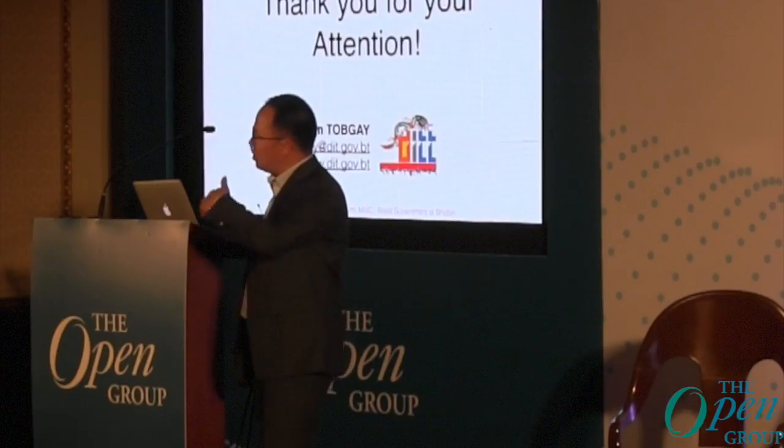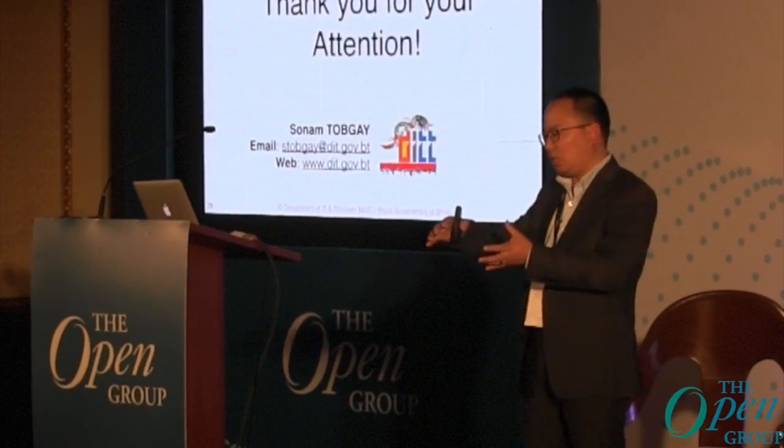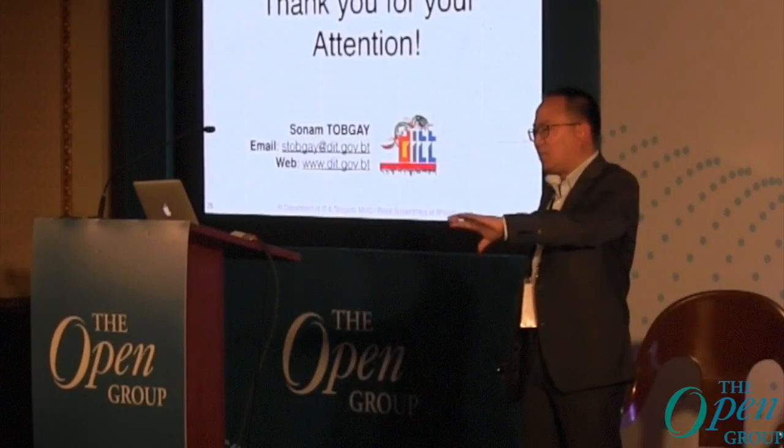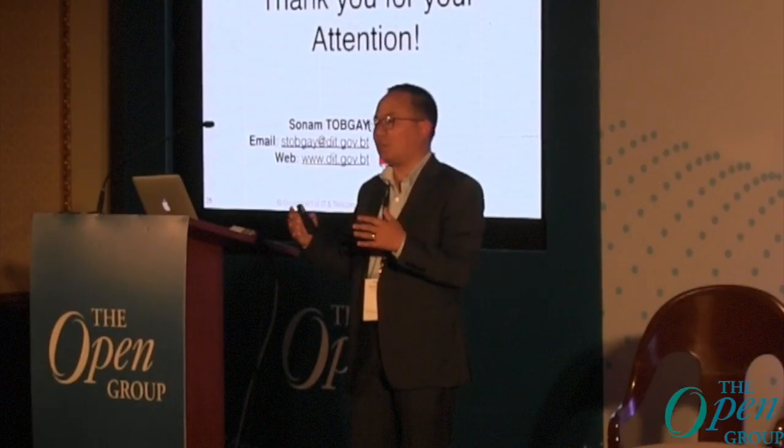Q: What architecture decisions have you taken while conceptualizing eGIF? A: The key decision was centralizing ICT initiatives. Initially, every agency had its own ICT initiatives. Through our EA practice, we learned that centralizing those initiatives has lots of advantages. Through our governance mechanism, we bring all ICT projects together to a central department to track them. For a small country like ours, it is always good to centralize ICT decision-making based on architectural governance processes. If anything wasn't fully answered, let's have a bilateral discussion after the presentation. Thank you.